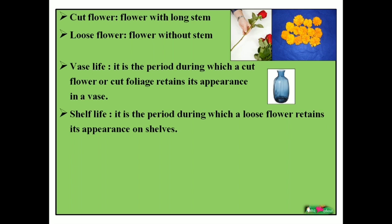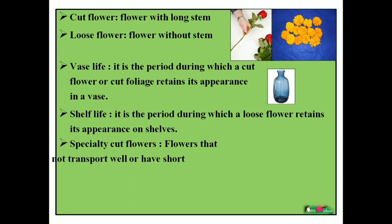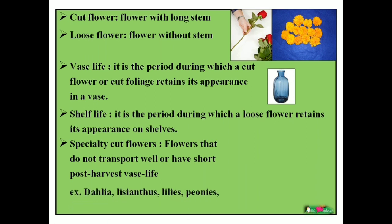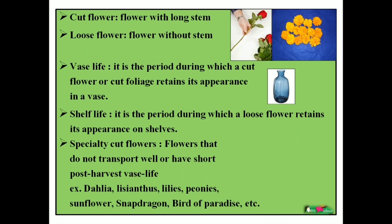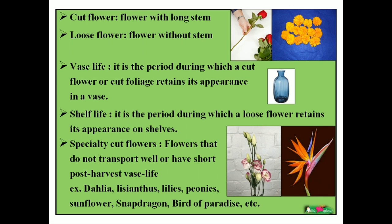The next term is specialty cut flower. Specialty cut flowers have a short vase life and cannot be transported easily. Examples are dahlia, lisianthus, lilies, peonies, sunflowers, snapdragon, and bird of paradise, etc. They are special flowers but cannot be transported well. Two pictures are shown here — one is lisianthus and the second is bird of paradise.